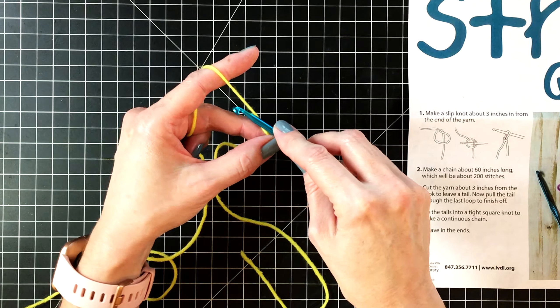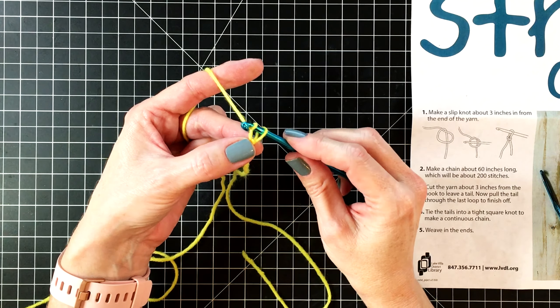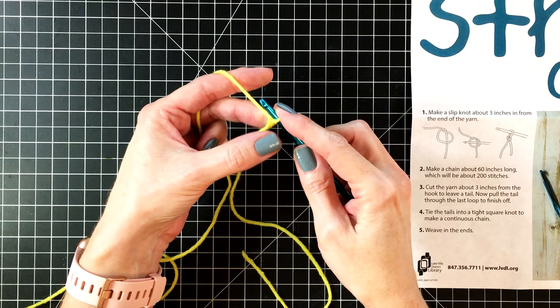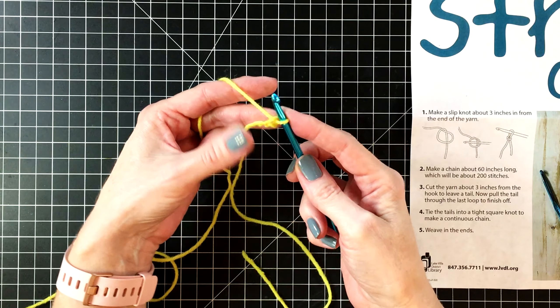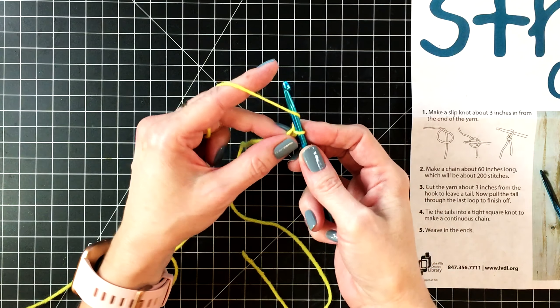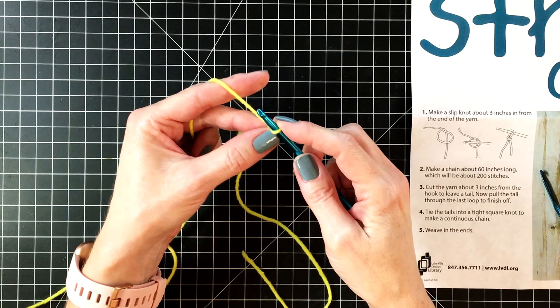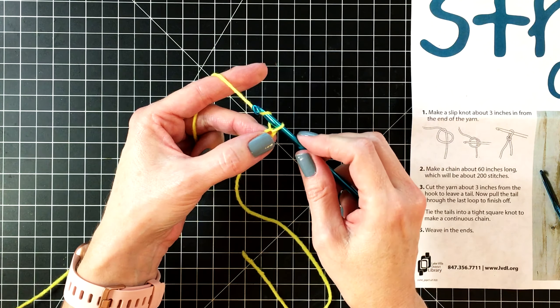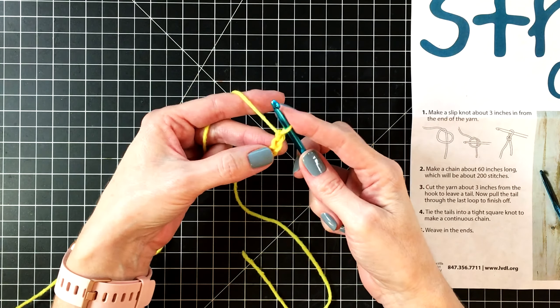To create your chain you're going to wrap your hook around the yarn and then slowly pull it through the loop. Let's do that again. You wrap it around the yarn and slowly pull it through the loop. So wrap it around the yarn, grab it with the hook, and pull it through the loop.